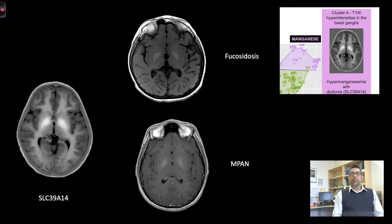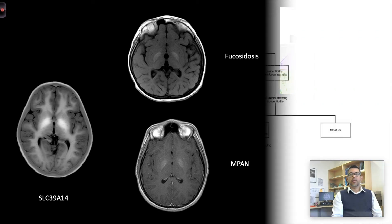Children who had manganese deposition in the brain due to genetically determined transporterpathies had a very bright T1-weighted signal in the basal ganglia, but also elsewhere in the brain, and you will see that this is contrasted with the lesser intensity and signal seen in some other disorders.